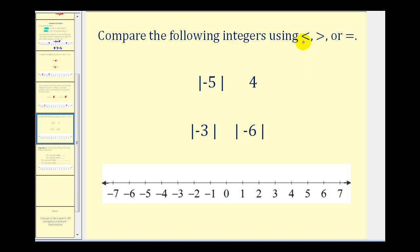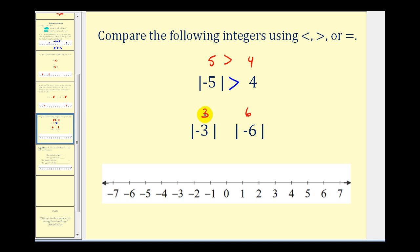Let's do a couple more comparisons using less than, greater than, or equal. I recommend evaluating the absolute value first. The absolute value of negative five is five, because negative five is five units from zero. So we're really comparing positive five and positive four — five is greater than four, so we use that same inequality to compare the absolute value of negative five and positive four. For the second example, the absolute value of negative three is three, and the absolute value of negative six is six. We know that three is less than six, so we use the same inequality to compare these two absolute values.